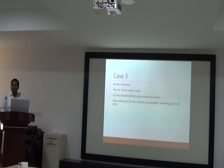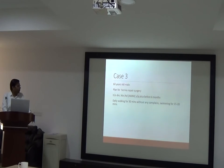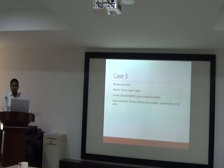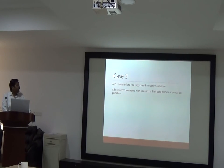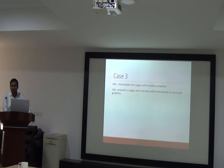Case 3: a 60-year-old male planned for hiatal hernia repair — considered high-risk surgery — with history of diabetes and hypertension, prior anterior wall MI, and PTCA 6 months ago. The patient is able to do daily walking for 30 minutes without complaints and walking briskly for 15–20 minutes — functional capacity more than 4 METs. With intermediate surgery and good functional capacity, proceed to surgery with risk-appropriate management and confirm beta-blocker and ACE inhibitor as per EF.